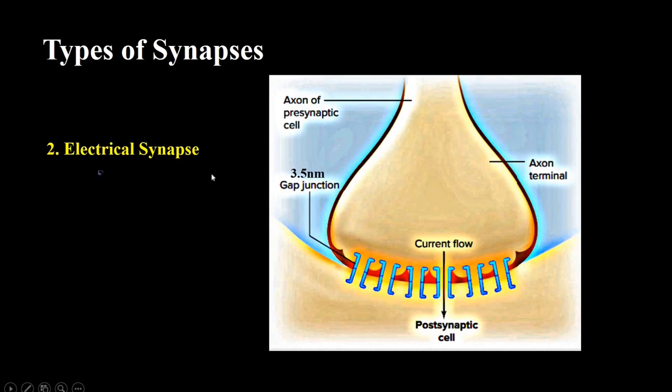So the point is, these electrical synapses transfer signals much faster than chemical synapses. And the second point is, as we discussed earlier, where the chemical synapses can be inhibitory or excitatory, but the electrical synapses are excitatory only.